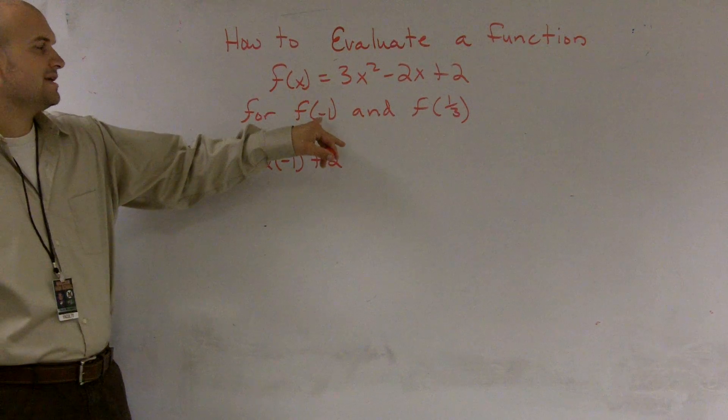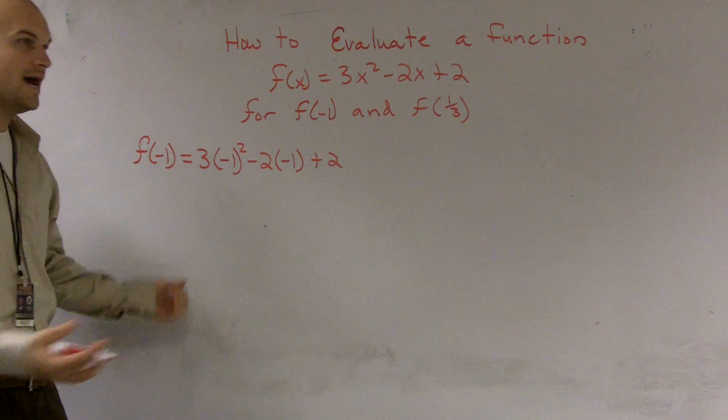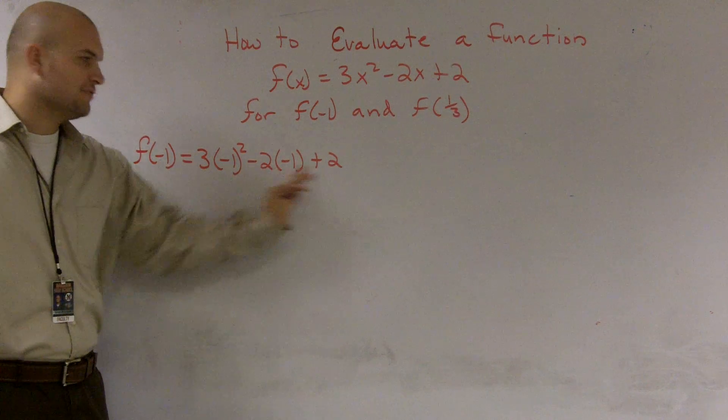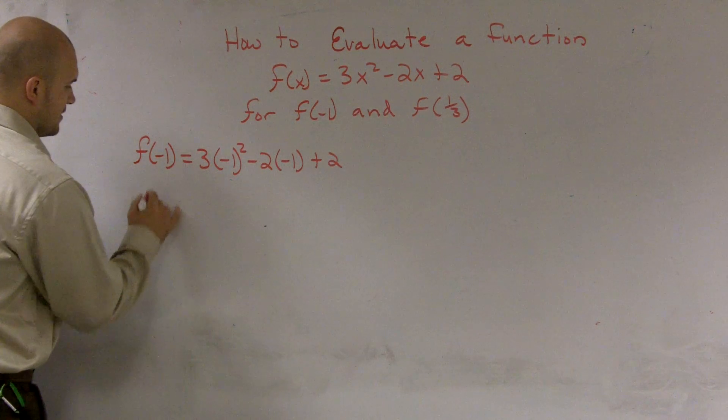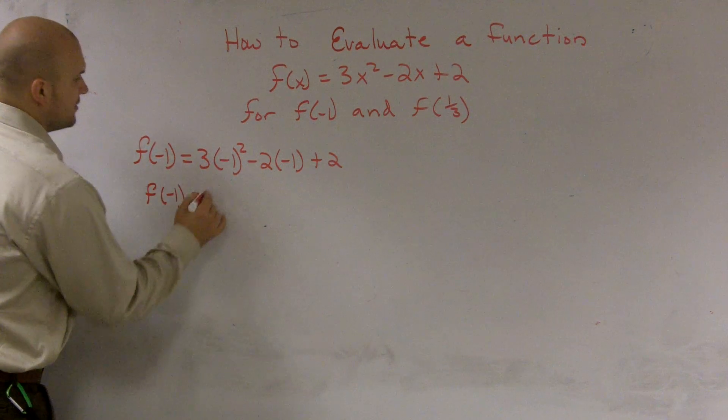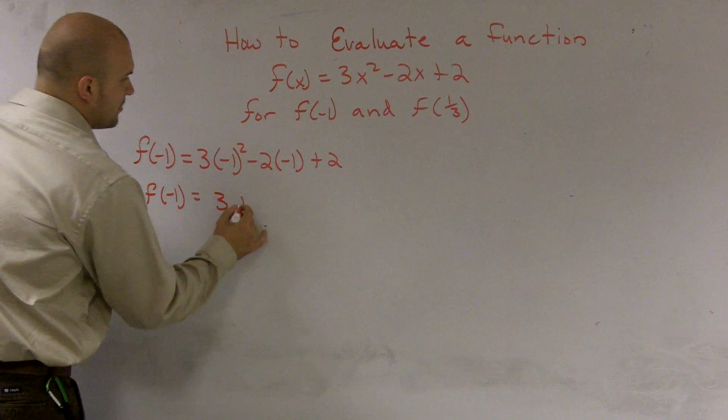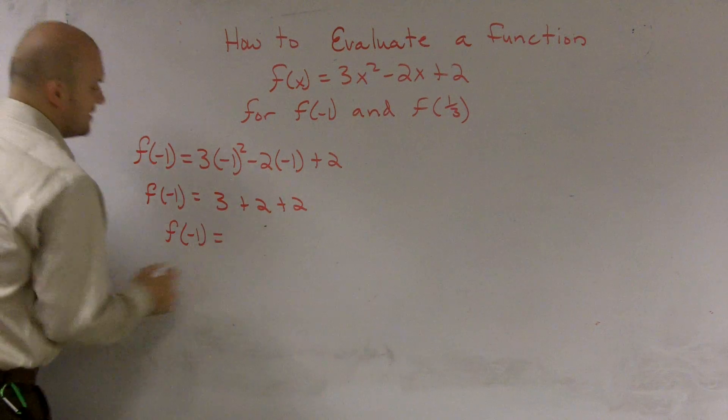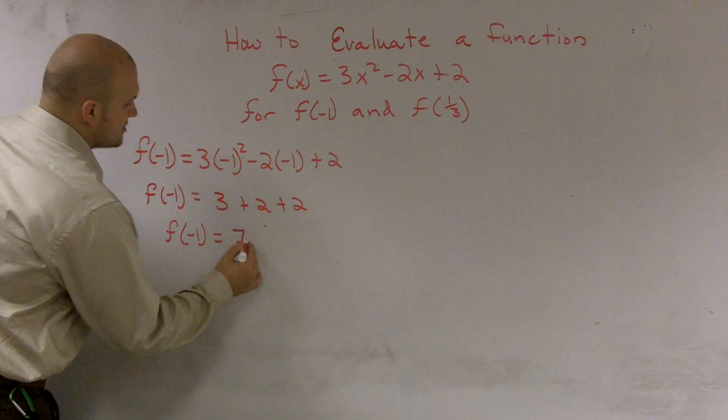Therefore, you can notice this negative 1 has now replaced every spot where I had the x in my original function. Now, from here, it's just simple simplifying this equation. So f(-1) squared comes in positive 1 times 3 plus 2 plus 2. f(-1) = 3 + 2 is 5 + 2 is 7.